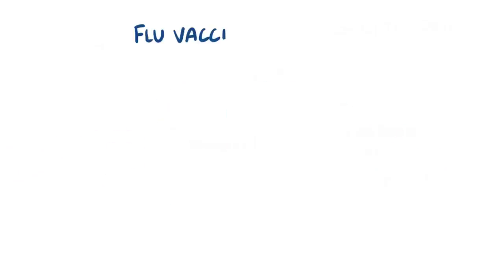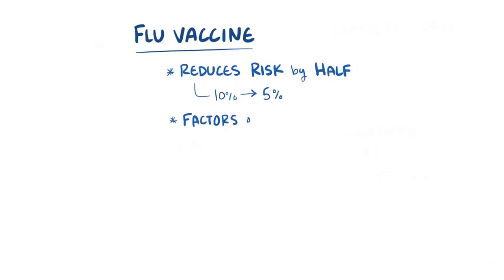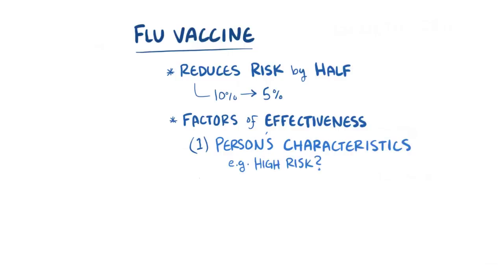On average, the flu vaccine reduces the risk of illness by half, roughly falling from 10% to 5% in terms of likelihood of getting sick over the entire winter season. And two factors play an important role in determining if the flu vaccine will protect a person from illness. First, a person's characteristics, like being in a high risk category, can make that person more susceptible to the virus despite being vaccinated. Second, the vaccine has to match the circulating flu virus of the season. Since flu viruses are constantly mutating, the flu vaccine formulations are reviewed each year to keep up with any changes.